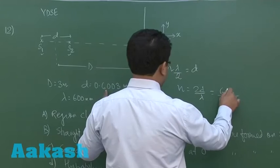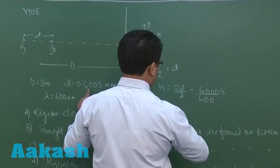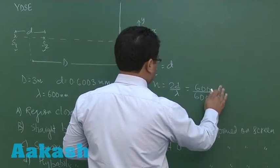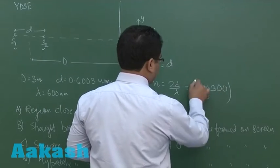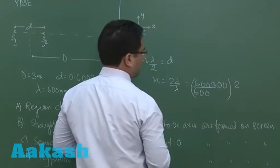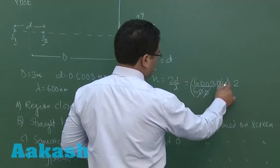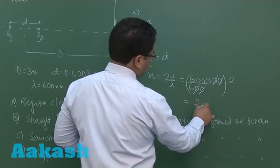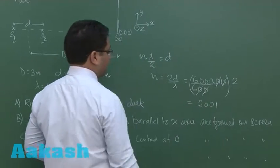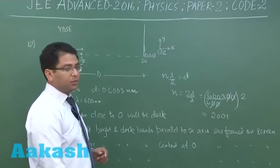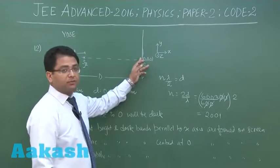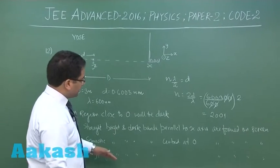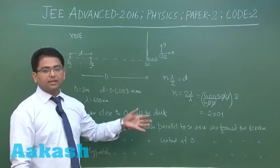After converting, we get 300 multiplied by 2, and after cancellation this gives n = 2001 — an odd value. Since n is odd, this point will have a dark band. So option A is correct.